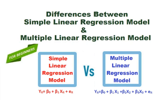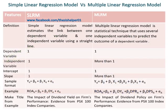Differences between Simple Linear Regression Model and Multiple Linear Regression Model. Simple Linear Regression Model estimates the link between one dependent variable and one independent variable using a straight line. Whereas Multiple Linear Regression Model is a statistical technique that uses several independent variables to predict the outcome of a dependent variable.